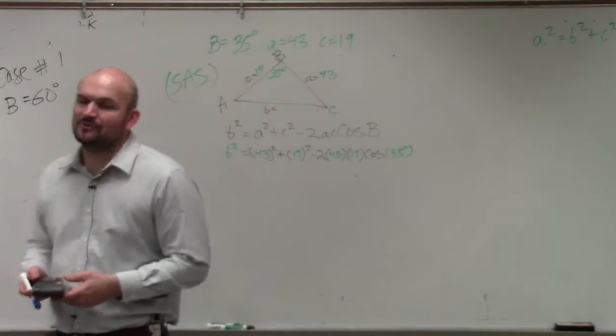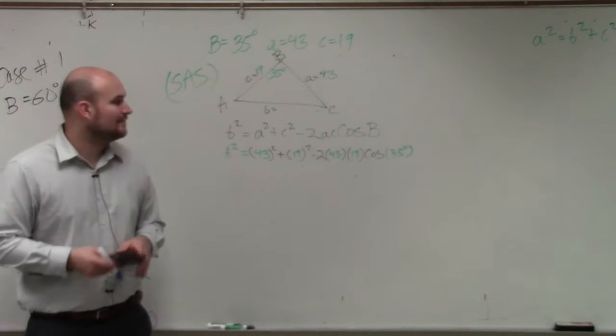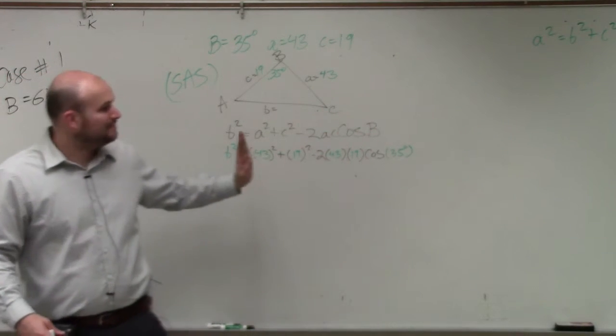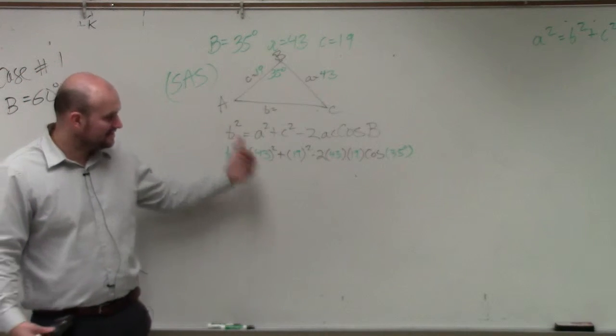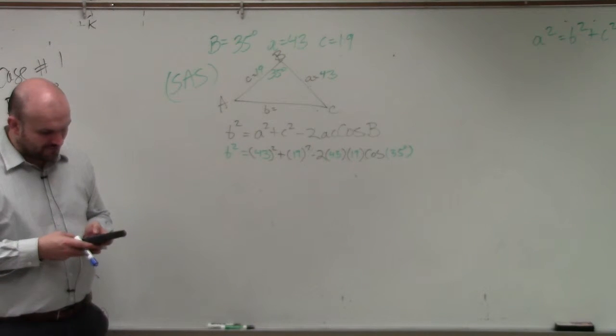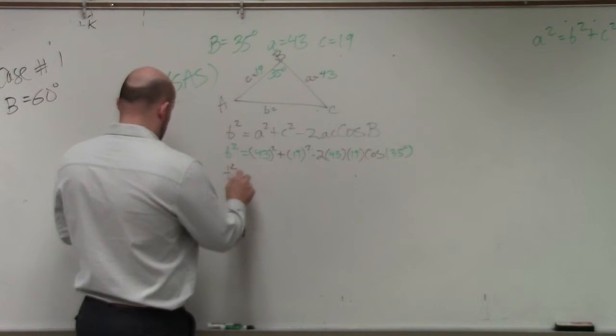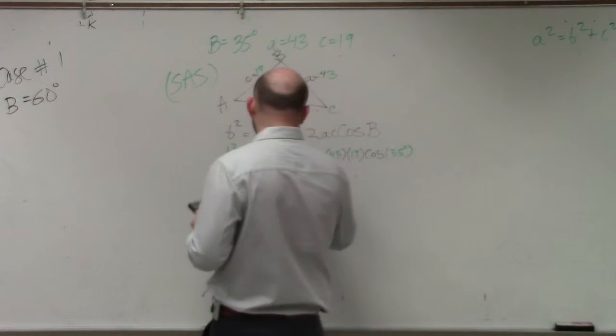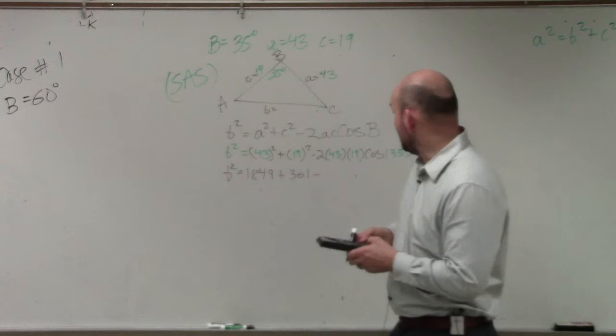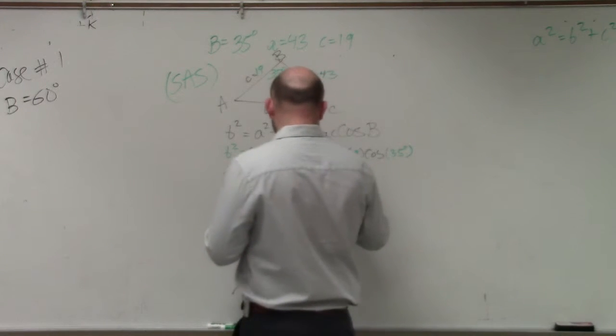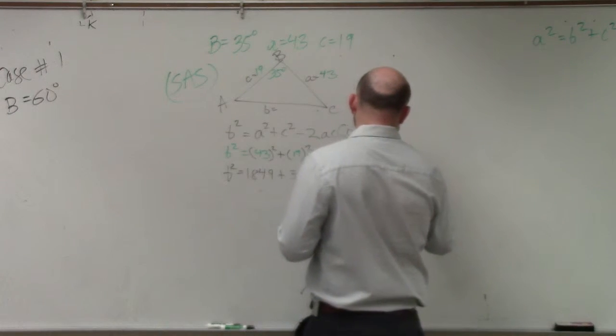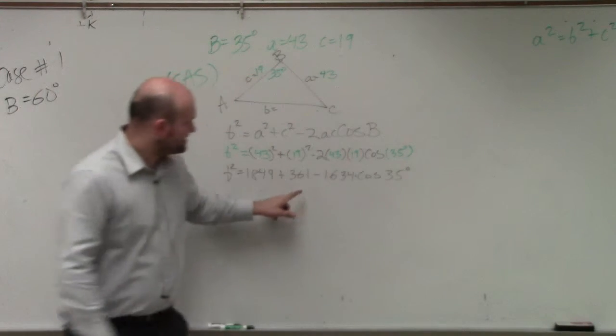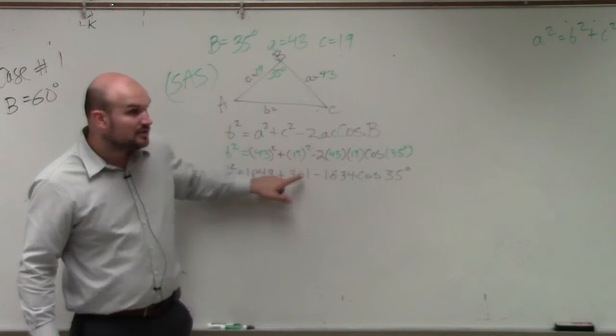However, I will say that's not where my students make their mistakes. Students make their mistakes using the rules of order of operations. So the best advice I would give, rather than trying to do things quickly in your head, my best piece of advice would just be doing things step by step. It takes you a little bit longer, but this is a great way to avoid mistakes. So let's just do 43 squared. 43 squared is 1,849 plus 19 squared: 361 minus 2 times 43 times 19 is 1,634 times the cosine of 35 degrees. What everybody wants to do, and this is the number one mistake that students make, is they subtract the 361 from the 1634. You can't do that.